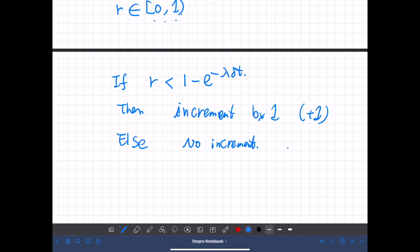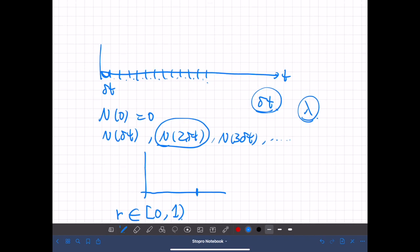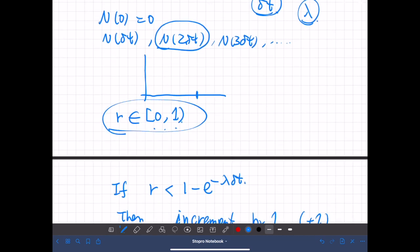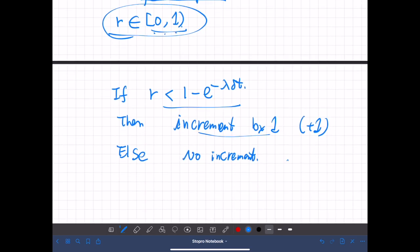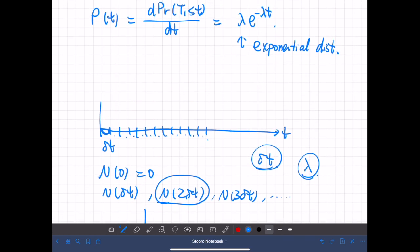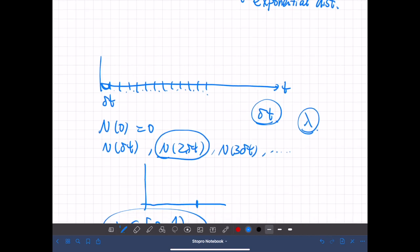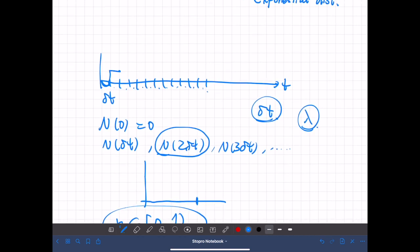So this is the basics. That means at every step, we draw a random number, a uniform random number between 0 and 1, and compare that value with this. And if this is satisfied, then we increase the random variable. Otherwise, it will stay the same. And we continue this over and over. So let's see the actual examples.